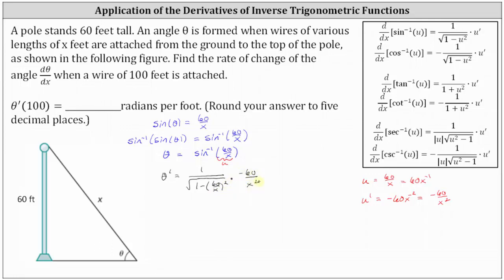Let's see if we can simplify this. We have θ' equals, in the numerator, 1 times -60, which is -60. In the denominator, we have x² times √(1 - 3600/x²). Now, we could leave the derivative in this form here, but it'll be more simplified if we clear the fraction from under the square root.